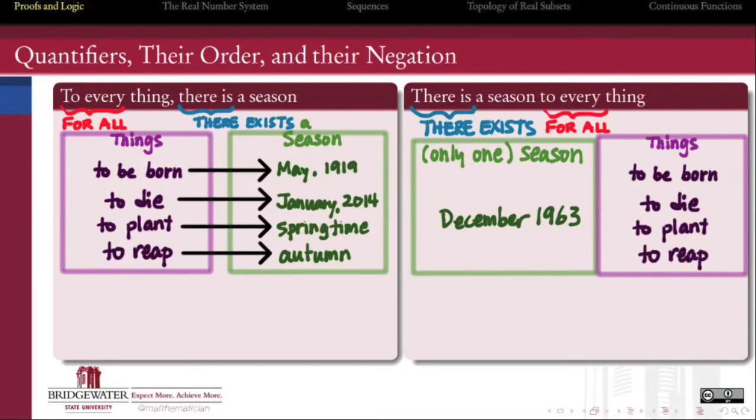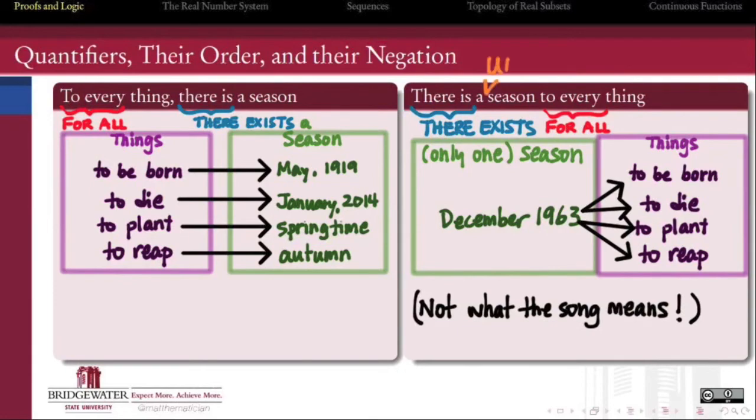And this is a big difference. To see the difference, you can add the word unique when the existential quantifier comes first, and add the phrase its own when the existential quantifier comes second.